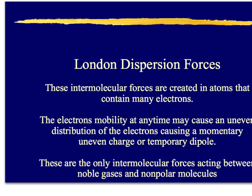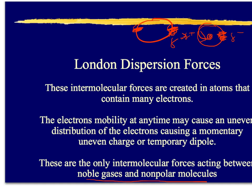London dispersion forces are intermolecular forces created in atoms that contain many electrons. These can occur in any type of atom, even noble gases, because electrons are always moving around the atom. If there are more electrons on one end of the atom or molecule, that end is slightly negative and the other end is slightly positive. This slight negative is attracted to the slight positive of a neighboring atom — and that is a London dispersion force. These are the only intermolecular forces acting between noble gases and nonpolar molecules. Please write down any questions and ask them in class next time.